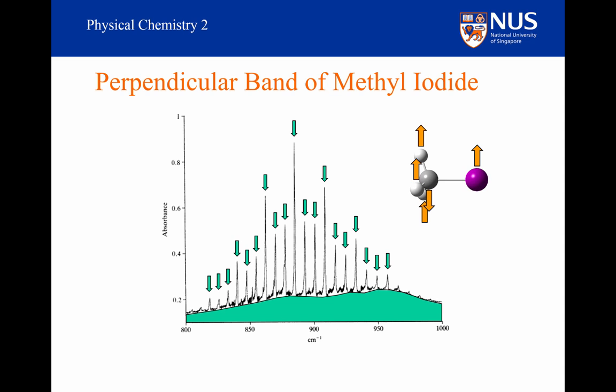Well, because delta K can be equal to plus or minus 1, it means that for every initial J level, there are lots of K levels we can move between. What this means is that the PQR branches are no longer on top of each other, as they were for the parallel bands. This time, because K is changing, the PQR branches are now displaced from one another. So we are still going to get PQR branches, but they are all going to be displaced from one another. So we are going to see lots of PQR branches.